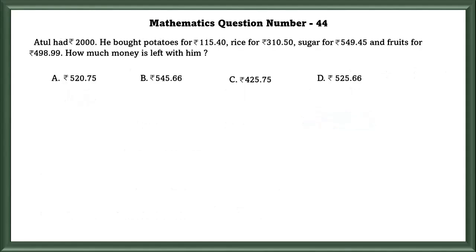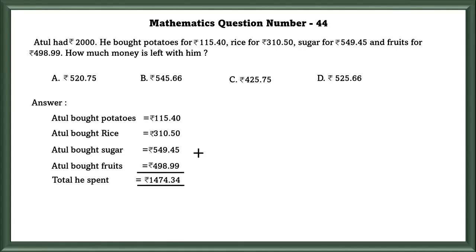Mathematics question number 44. Atul had 2000 rupees. He bought potatoes for 115.40 rupees, rice for 310.50 rupees, sugar for 549.45 rupees, and fruits for 498.99 rupees. How much money is left with him? First, we have to add all the expenses and then we have to subtract it from the total money, which equals 525.66 rupees.